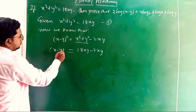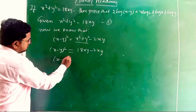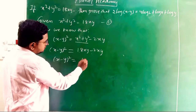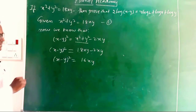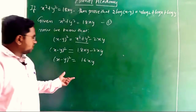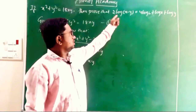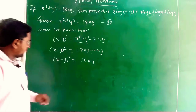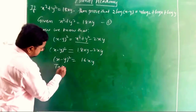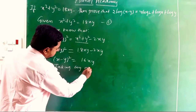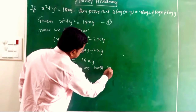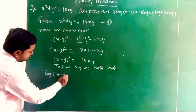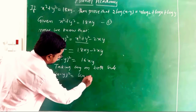Therefore (x − y)² = 16xy. Now I am taking log on both sides — because we have to show 2 log(x − y) = 4 log 2 + log x + log y. Taking log on both sides: log(x − y)² = log 16xy.